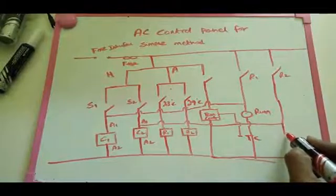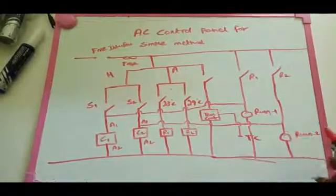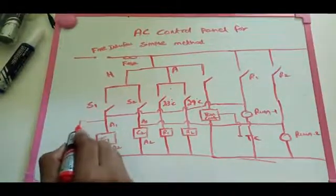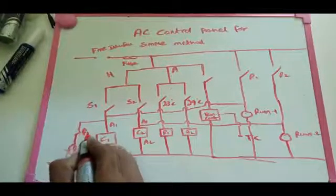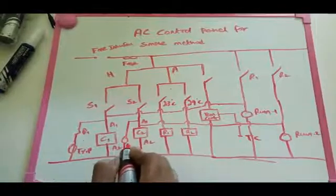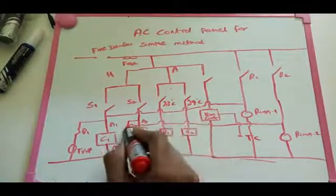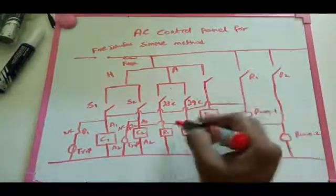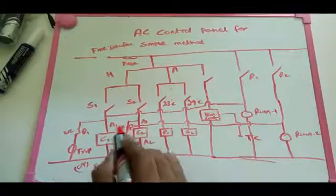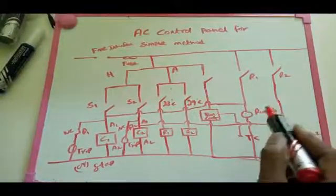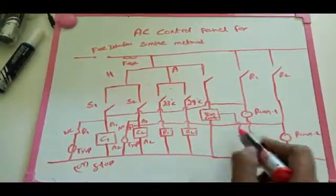We also need to add run and stop indications for AC1 and AC2. The run indication uses the NO contact of the relay or contactor. For the stop or trip indication, we use the NC contact of contactor C and the NC contacts of relay 1 and relay 2. This is the complete method to control two ACs based on the temperature controller and thermocouple. If you have any doubts, please comment. Don't forget to like and share this video.